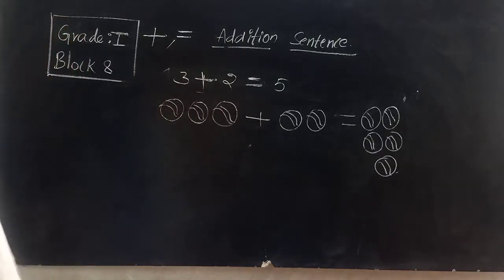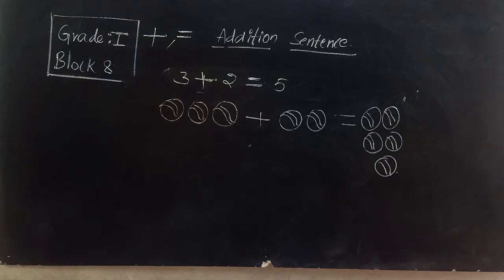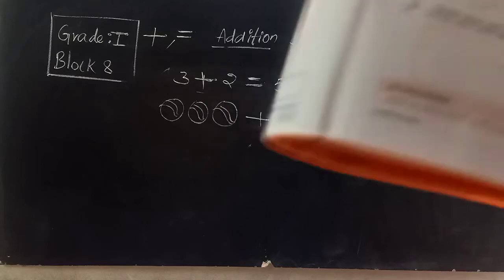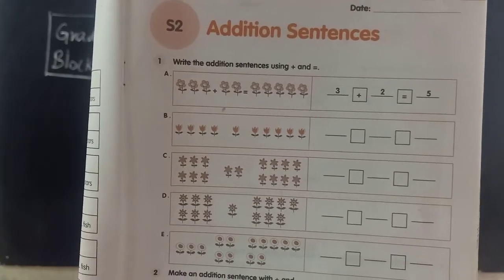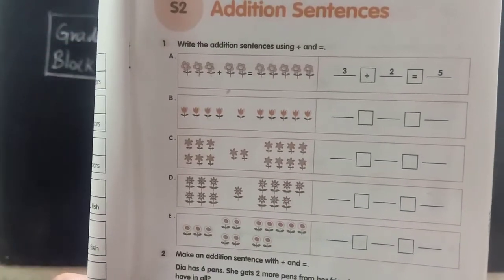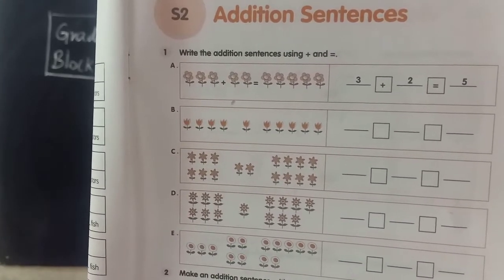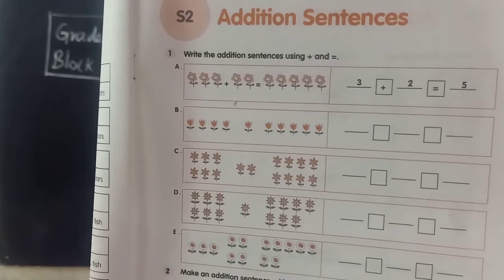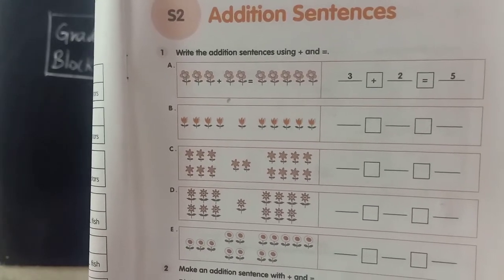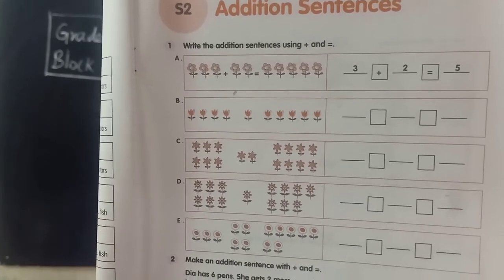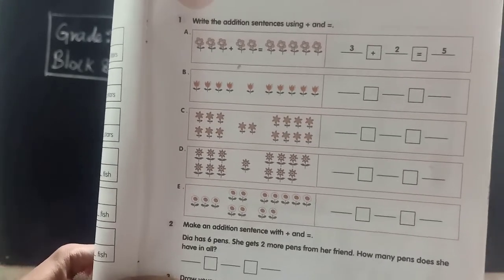Understood? Now everyone open your volumes to page number 45 — Addition Sentences. Have you opened your volume? This is your volume, addition sentences, page number 45. First question: for an addition sentence, which symbols do you have to use, children? Plus and is equal to symbols.